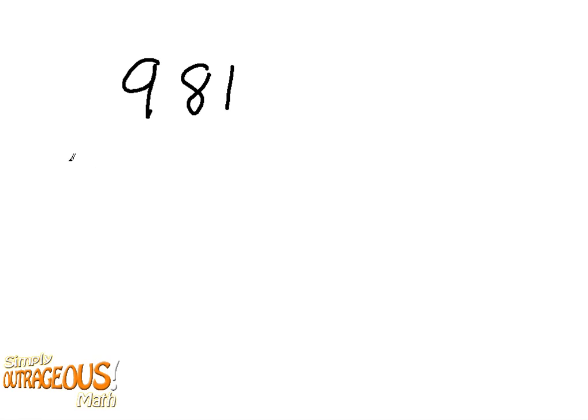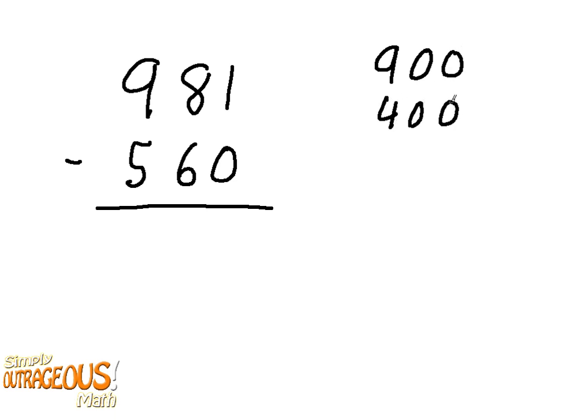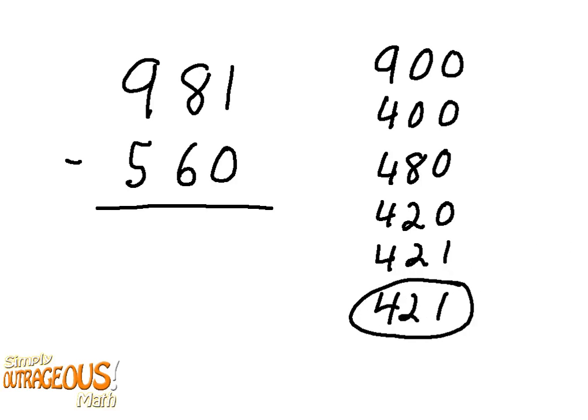681 minus 560. We start with 900, 400, 480, 420, 421, 421 is our answer. 900 minus 500 is 400. 400 plus 80 is 480, 480 minus 60 is 420, 420 plus 1 is 421, 421 minus 0 is 421.